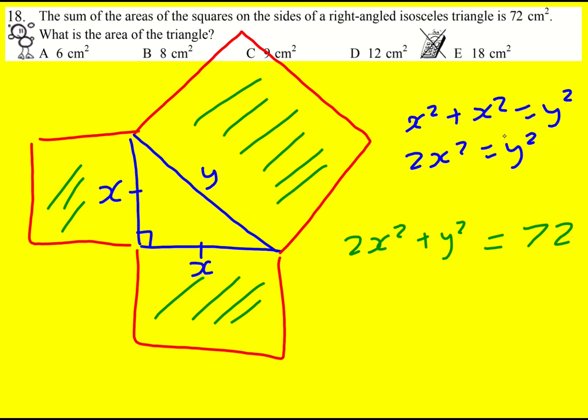So I can now just replace this y squared by this y squared and hence 2x squared. 4x squared is going to equal 72. I want to find x and y, remember, so I can find the area.